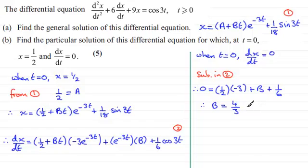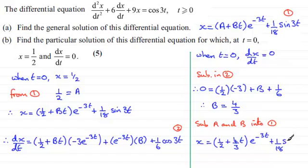Now that I've got a as a half and b as 4 thirds, I just need to substitute this into equation 1. So I'll just say sub a and b into 1. So that leaves me now with this particular solution, and that is x equals a, which is a half, plus b, which is 4 thirds, and that's multiplied by t, and all of this is multiplied by e to the power minus 3t, and then we've got plus the 1/18th sine 3t. And that is our particular solution.